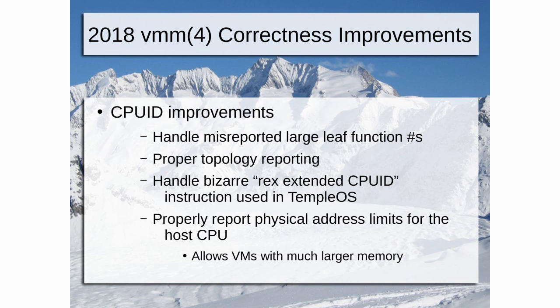CPU ID improvements: we were misreporting largely function numbers — if somebody passed in a request for CPU ID function number 50 million, we would just report back some random garbage. We now have proper topology reporting. There's a CPU ID function you can request that says 'tell me how many packages, cores, and hyperthreads I have,' and we now report back whatever the host has. On a machine with 48 cores, we were reporting back that you're a 48-core machine even though VMM has a single CPU — all VMs have a single CPU — so that was really odd. That broke Golang apps, because Golang would spawn up GoRoutines to match the number of physical CPUs reported.